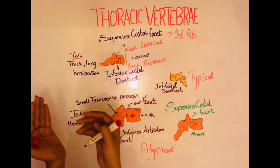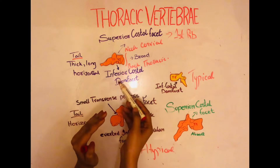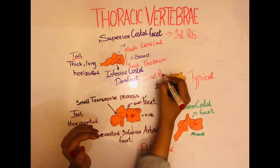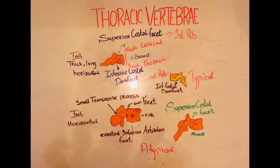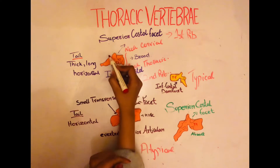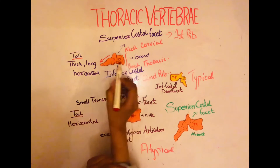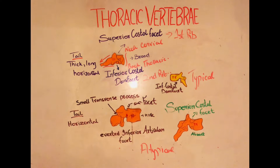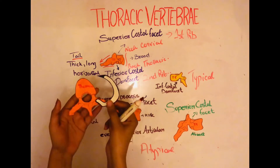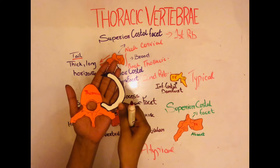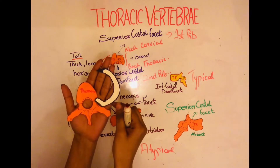Looking at the inferior costal demi facet, it has the attachment for the second rib. The pedicle of the T1 vertebrae is quite thick, long, and horizontal. The first rib attaches with the thoracic vertebrae as shown here.